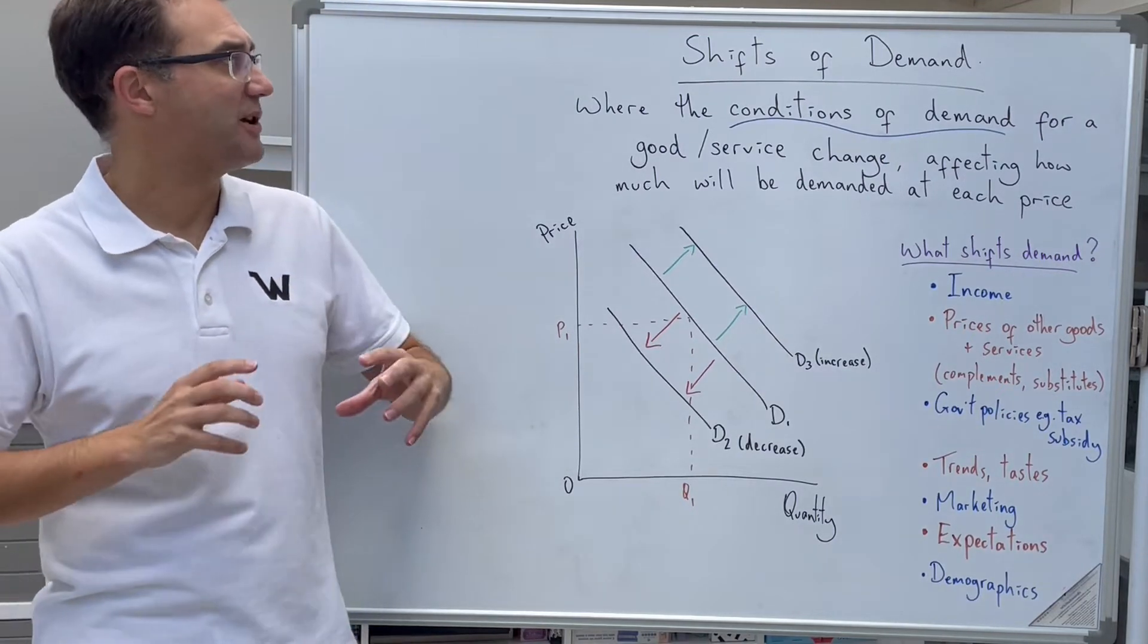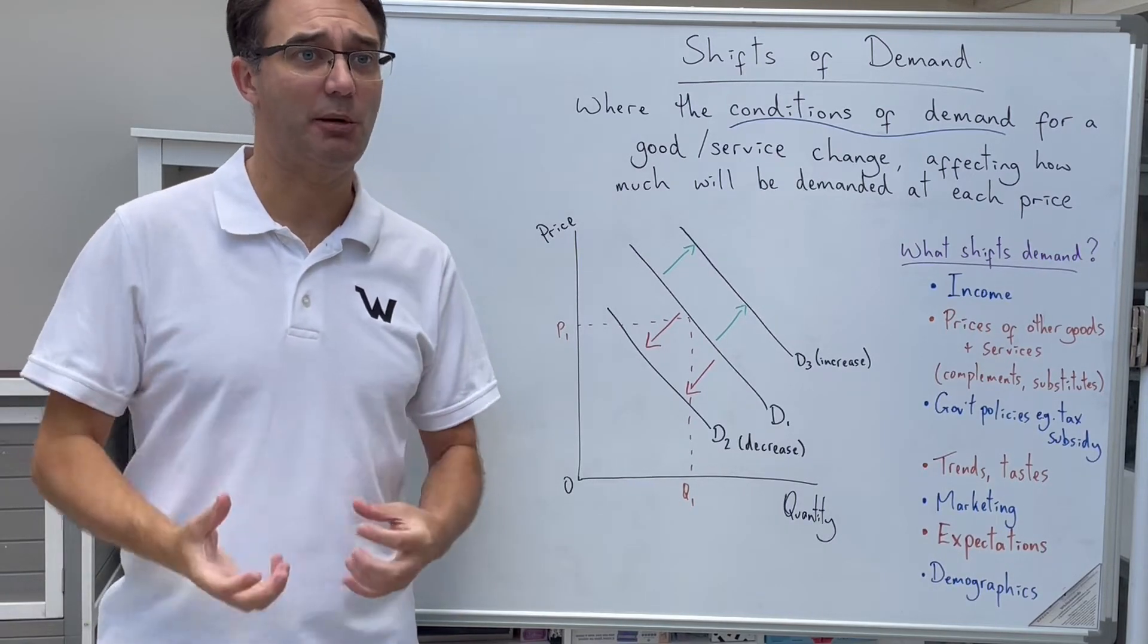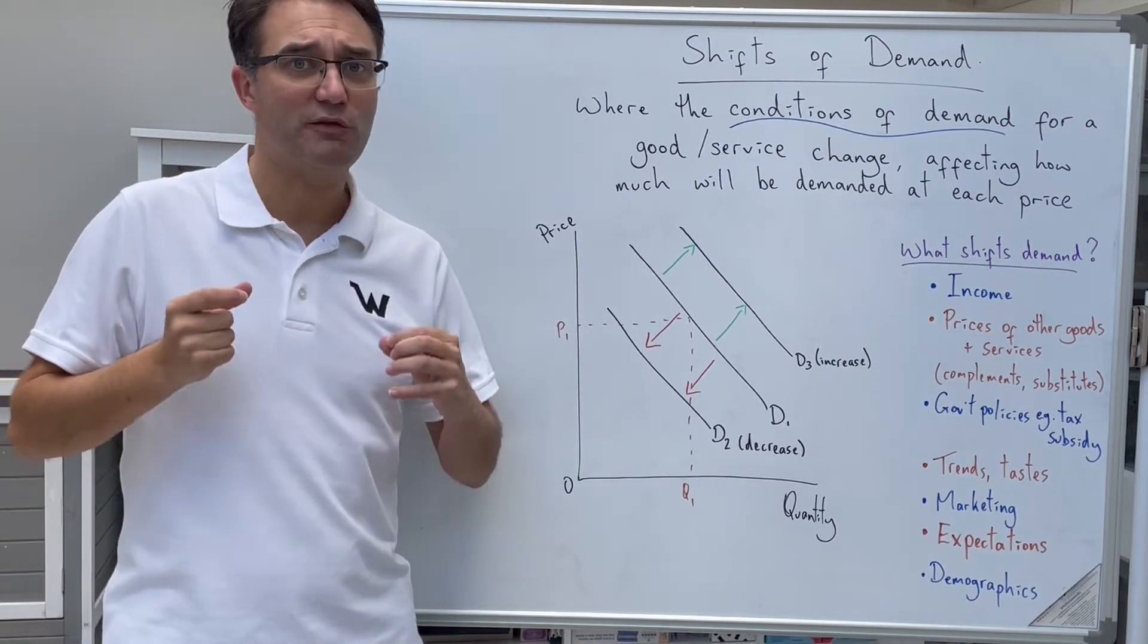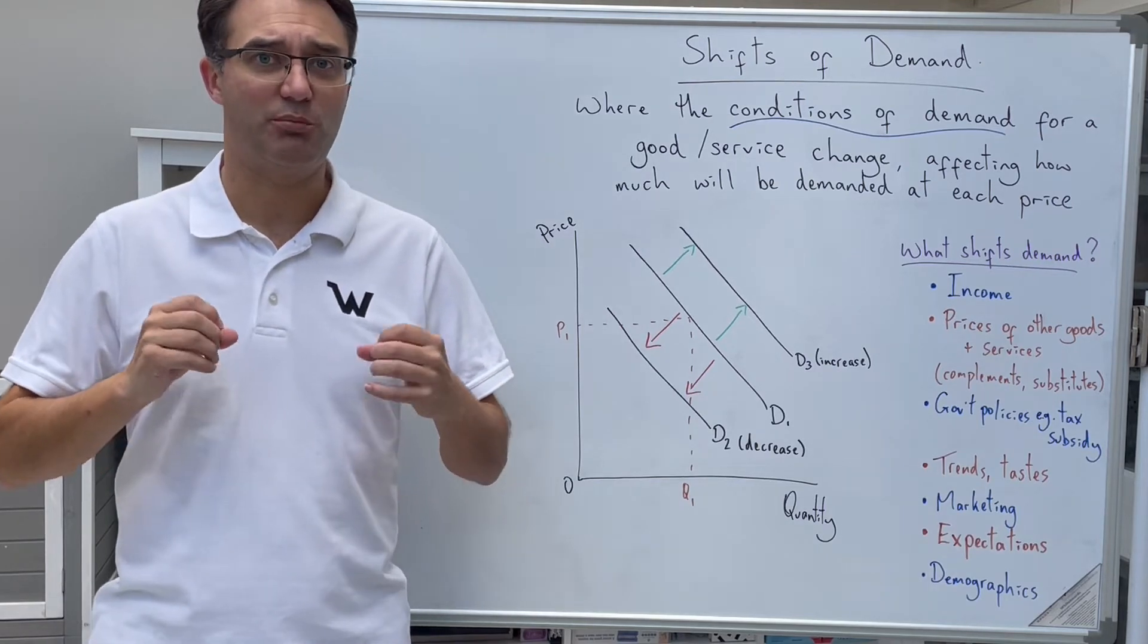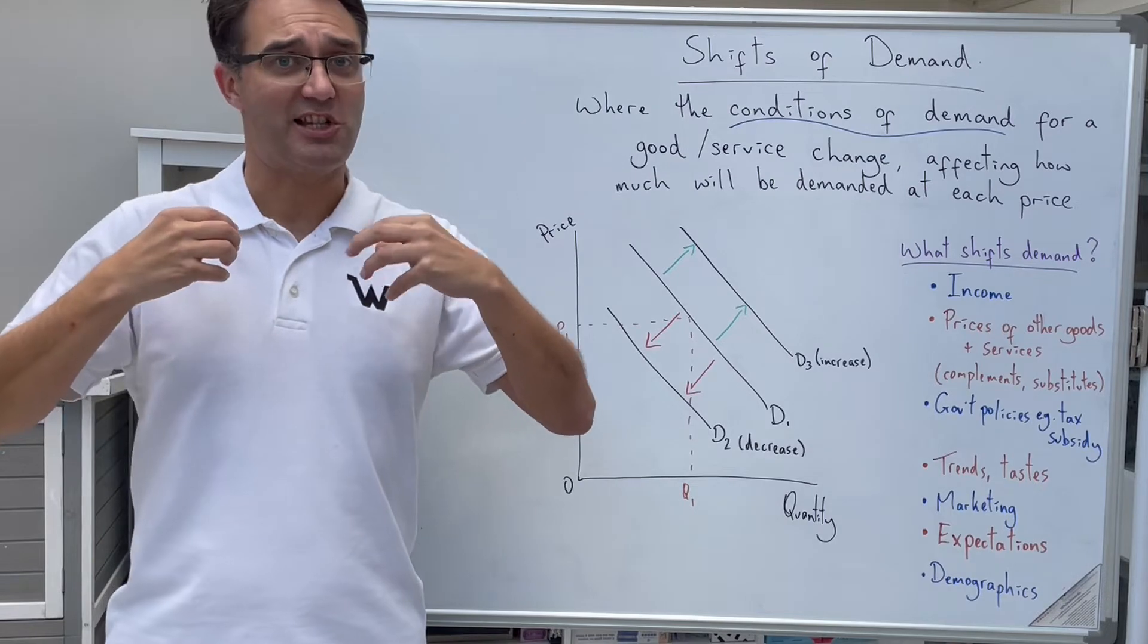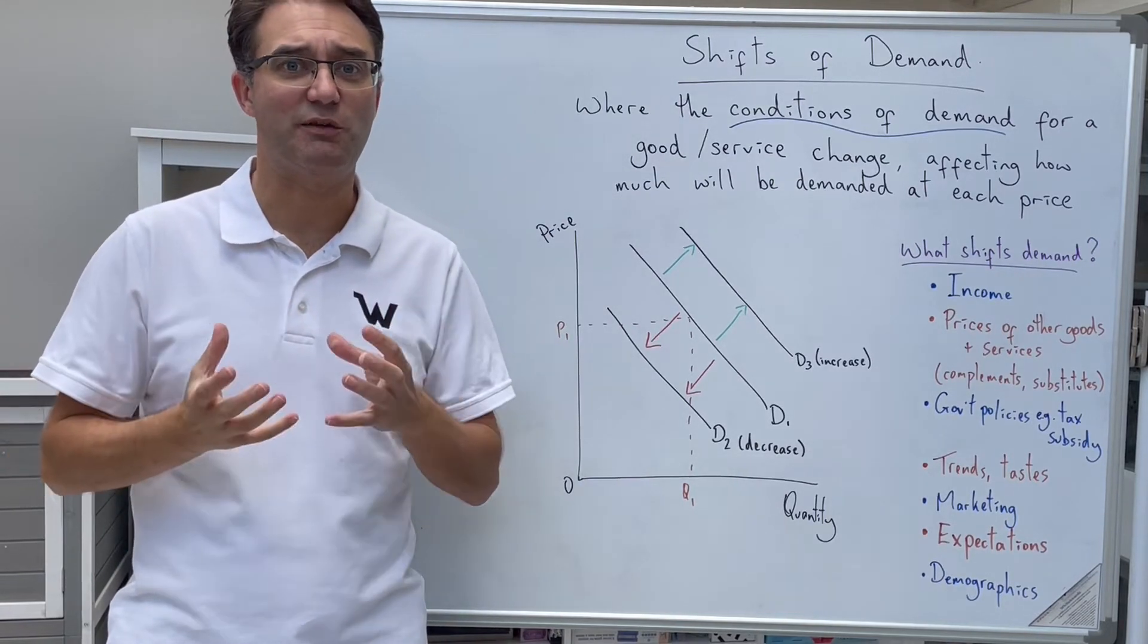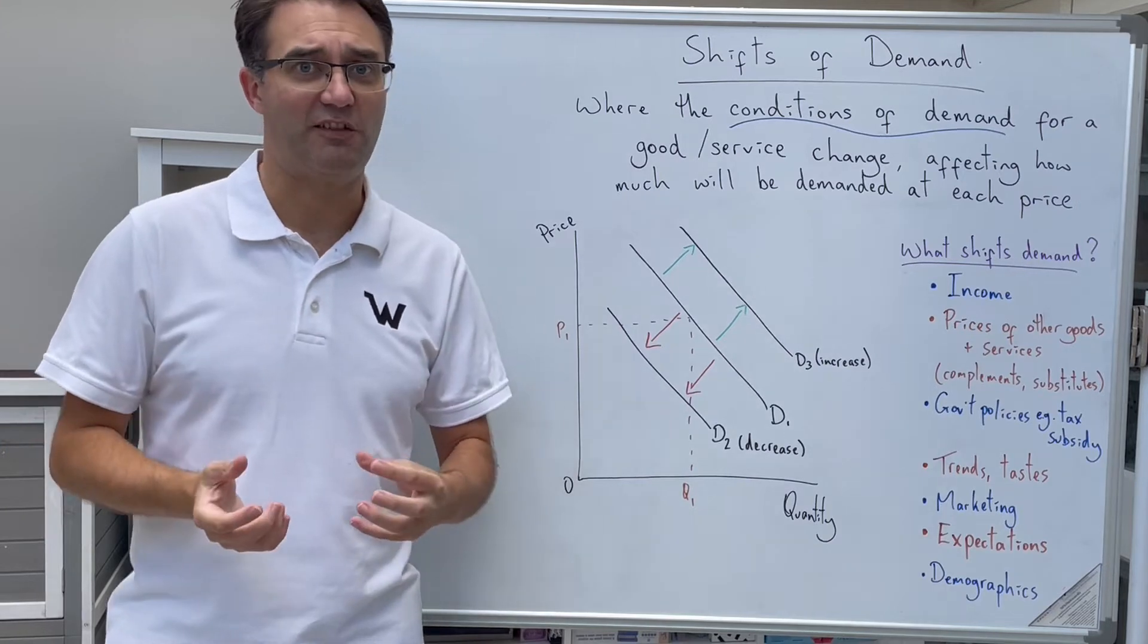In this video, we're going to be looking at what a shift of the demand curve shows and how they come about. The demand curve shows the relationship between the price and the quantity demanded. If the price is higher, then people will buy less of a good or service because they can get more utility for their money on buying other things.